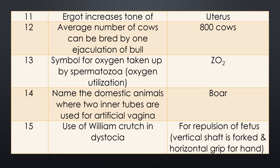Question 15. Use of William Crutch in dystocia? Answer: William Crutch is used for repulsion of the fetus. The William Crutch has a vertical staff which is forked and a horizontal shaft used for holding by the hand. It is used for repulsion of the fetus from the pelvic cavity to the abdominal cavity.